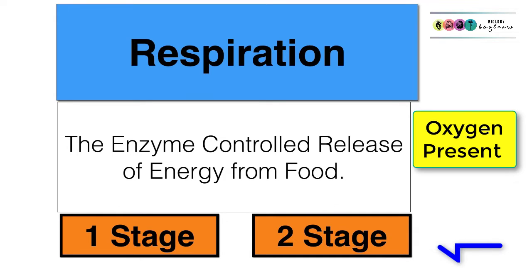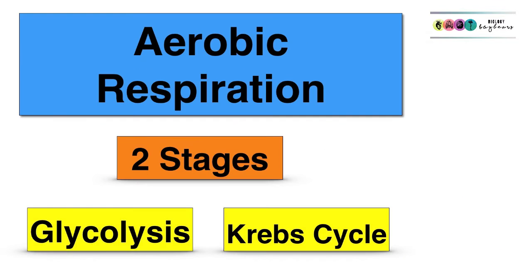If there is oxygen, it is a two-stage process known as aerobic respiration. The two stages in aerobic respiration are glycolysis followed by Krebs cycle.